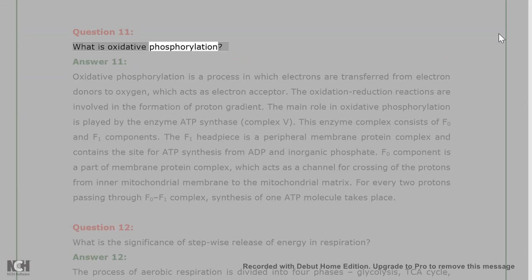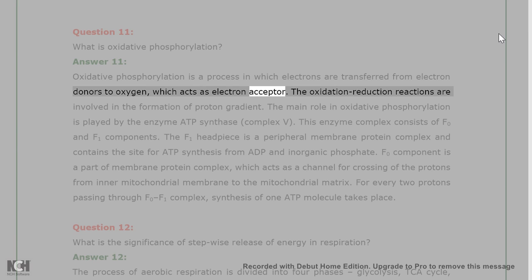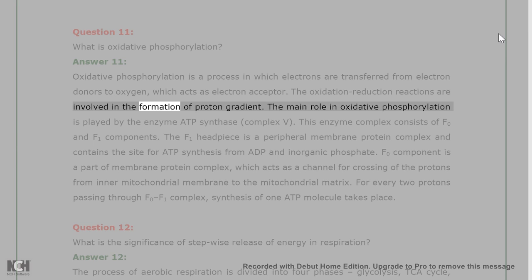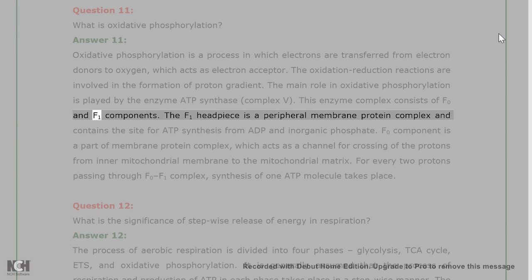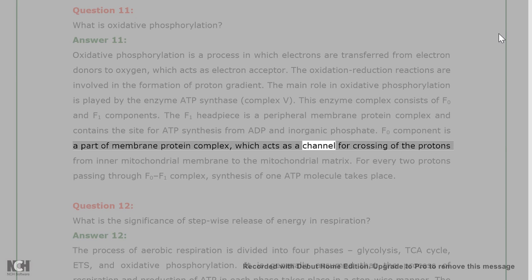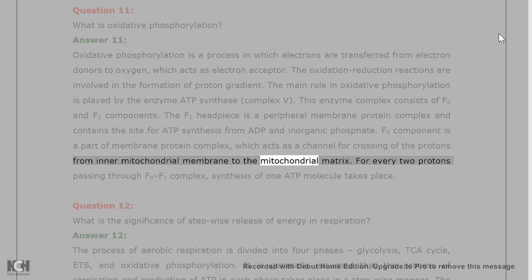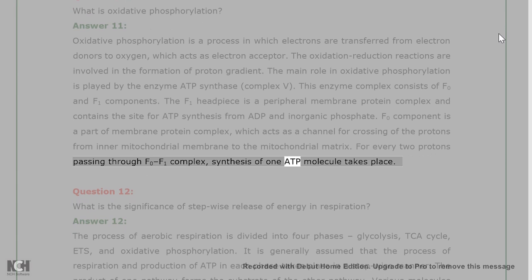Question 11: What is oxidative phosphorylation? Answer 11: Oxidative phosphorylation is a process in which electrons are transferred from electron donors to oxygen, which acts as the electron acceptor. Oxidation-reduction reactions are involved in the formation of a proton gradient. The main role is played by ATP synthase (Complex V), which consists of F0 and F1 components. The F1 headpiece contains the site for ATP synthesis from ADP and inorganic phosphate. The F0 component acts as a channel for protons crossing from the inner mitochondrial membrane to the mitochondrial matrix; for every two protons passing through F0, one ATP molecule is synthesized.